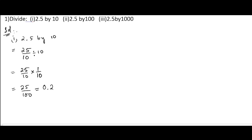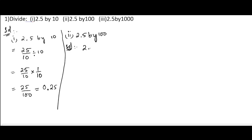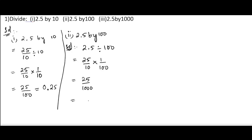Since we got two zeros in the denominator, we will put the decimal after two digits. So we write 0.25. Next, second bit: 2.5 by 100. We write 25 by 10, and to change the sign we take the reciprocal of 100, that is 1 by 100. So 25 ones are 25, and 10 into 100 will be 1000. Since there are three zeros in the denominator, we put the decimal after three digits.